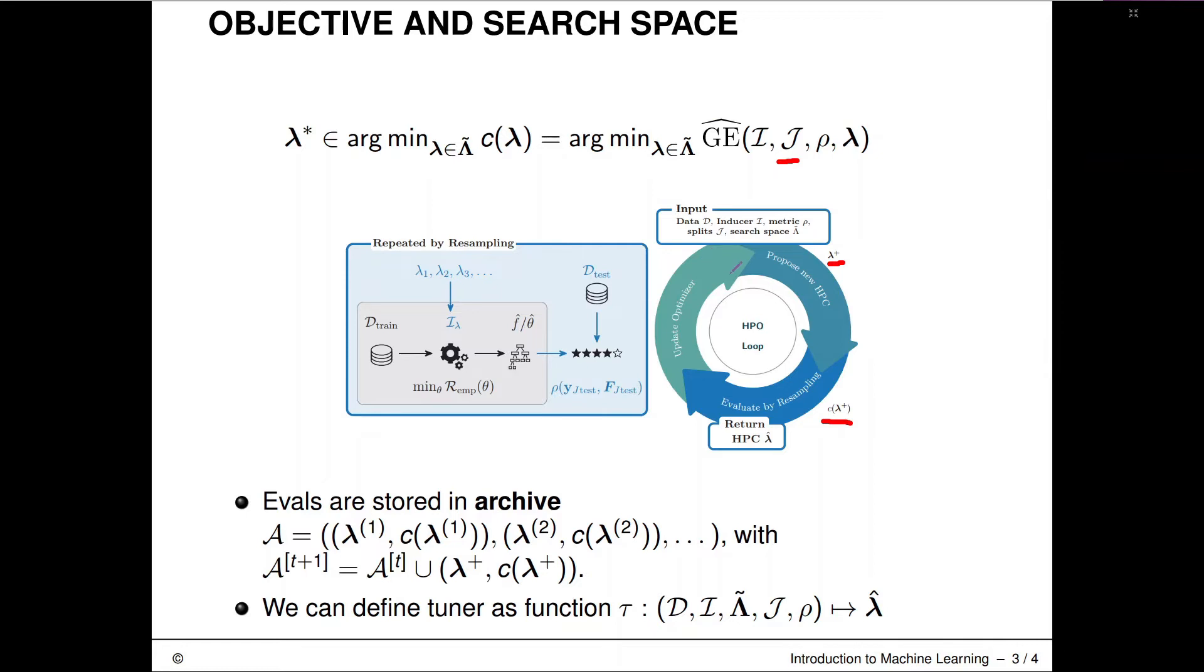So this C value here of that configuration, so the cross-validated score of the hyperparameter configuration goes into the optimizer. And we hopefully somehow update some internal state in our optimizer so we can smartly improve on the results we have obtained until here. And then iterate and go on. And at the end, we return this estimated Lambda hash here.